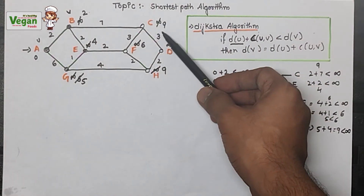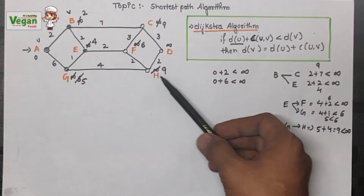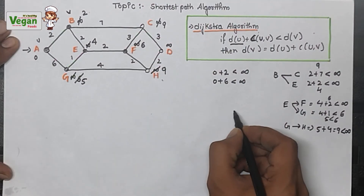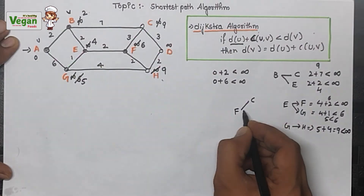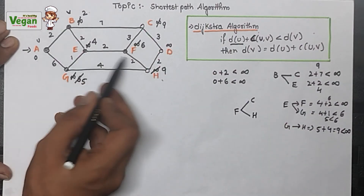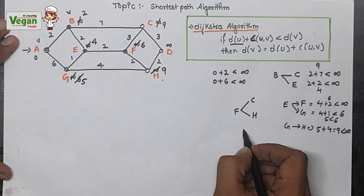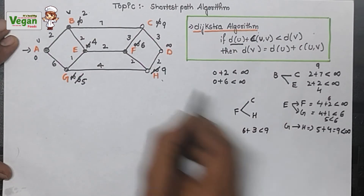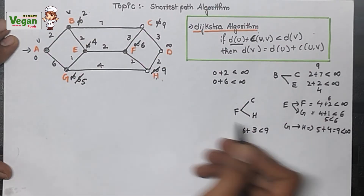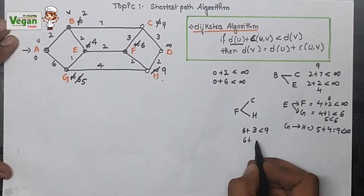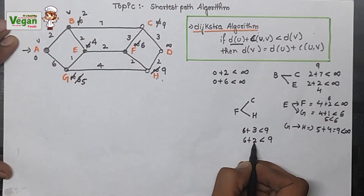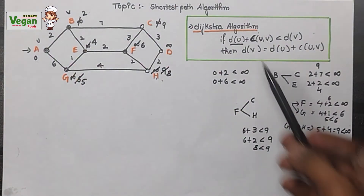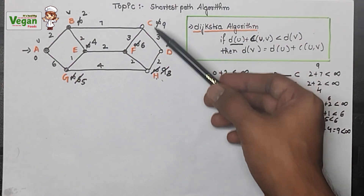Now we know C = 9, F = 6, and H = 9. The smallest is F with 6, so we select router F. From F we can go to C and H. F to C: 6 + 3 = 9, which equals C's current value of 9, so we keep it as is. F to H: 6 + 2 = 8, which is less than H's current value of 9, so we strike out 9 and update H to 8. Router F is now done.